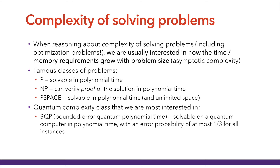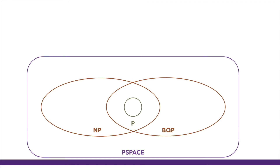BQP is, for our purposes, roughly the equivalent of classical P. This is the relationship between these classes: P is the smallest, included both in NP and BQP, and both are included in PSPACE. We do not yet quite know the relationship between BQP and NP. For example, the problem of finding the shortest path between two nodes in a graph is in P — there is a polynomial time algorithm for it.